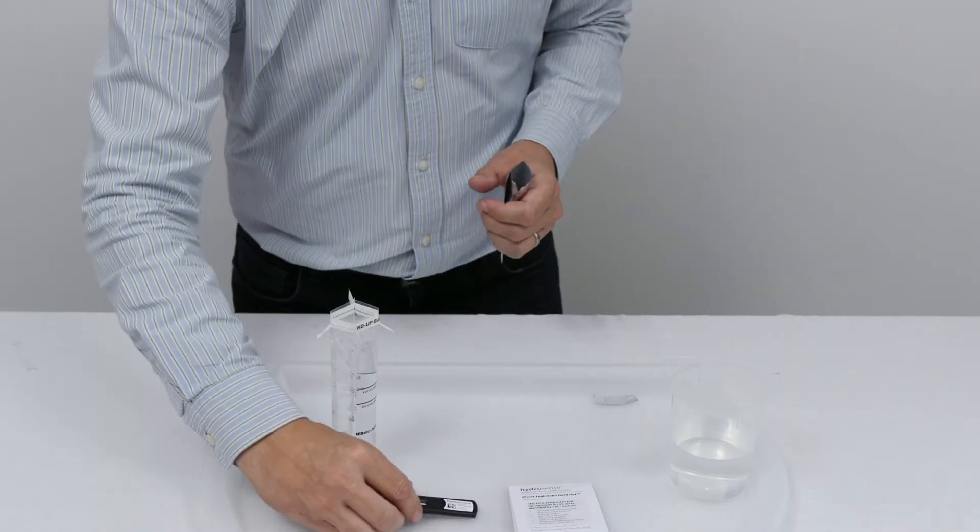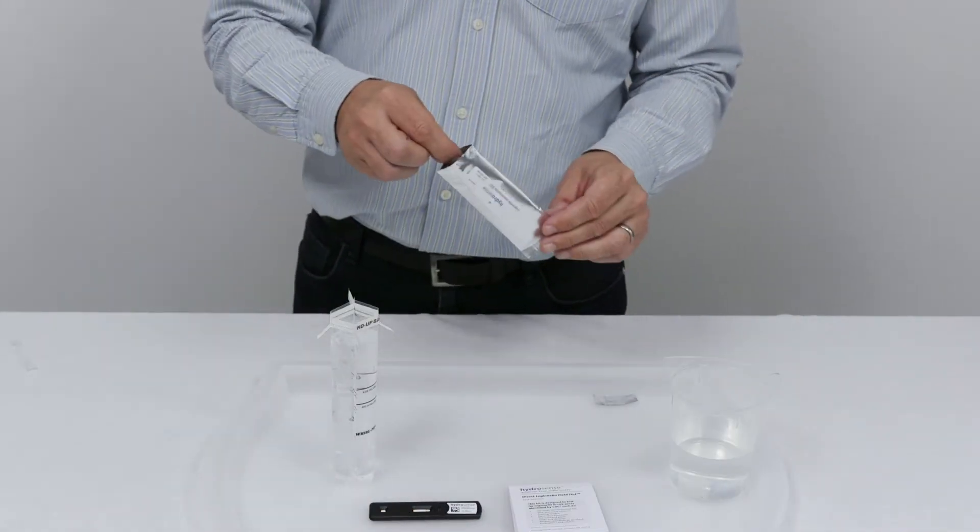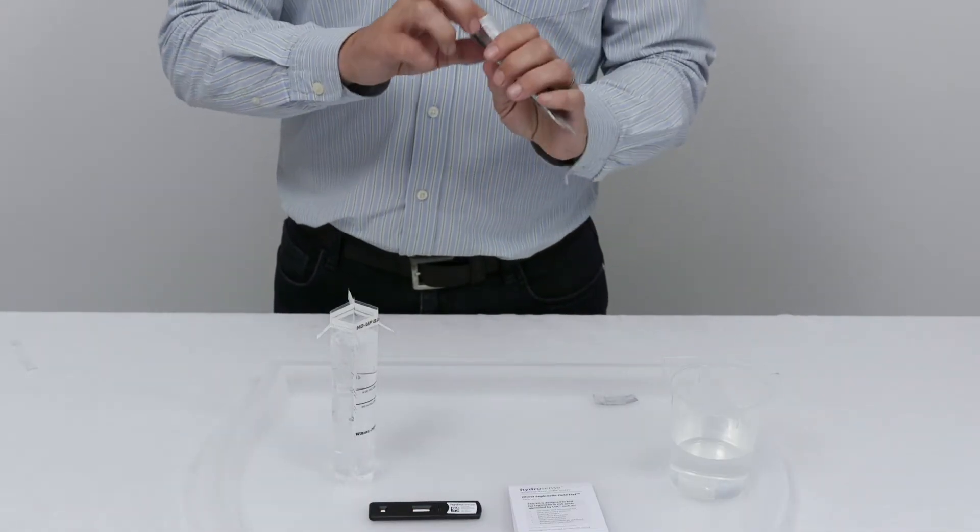Then we need to transfer the sample from the bag onto the test. Remove the test from its packaging and place it on a flat surface. Also in the foil there is an exact volume pipette.